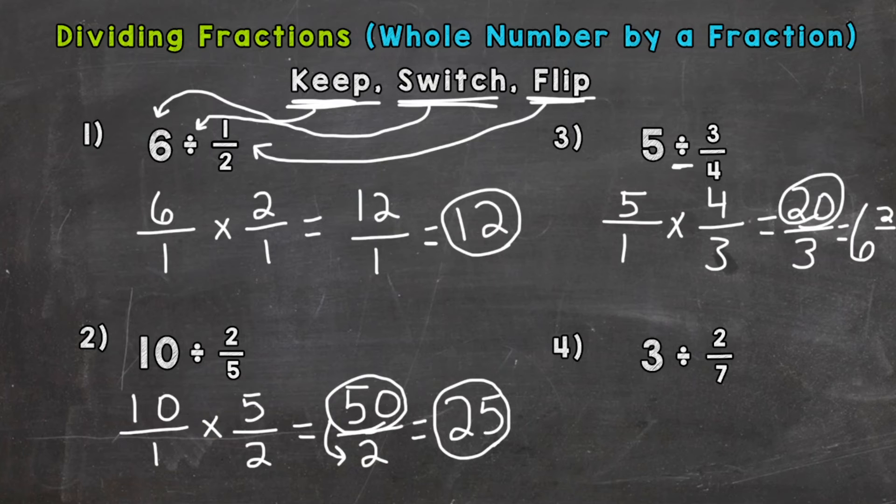which is going to be our numerator of our fractional part of this mixed number. So again, we did 20 divided by 3, and we got 6 wholes with a remainder of 2, and we keep the denominator the same. So we get 6 and 2/3.